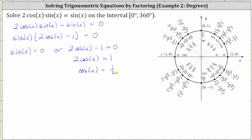So now to find the solutions of the equation over the given interval, we need to find the angles where sine x is equal to zero and where cosine x is equal to one half. Let's do this using the unit circle. Remember on the unit circle, x equals cosine theta and y equals sine theta. Which means to find the angles that satisfy sine x equals zero, we need to find the angles on the unit circle where the y-coordinate is equal to zero.